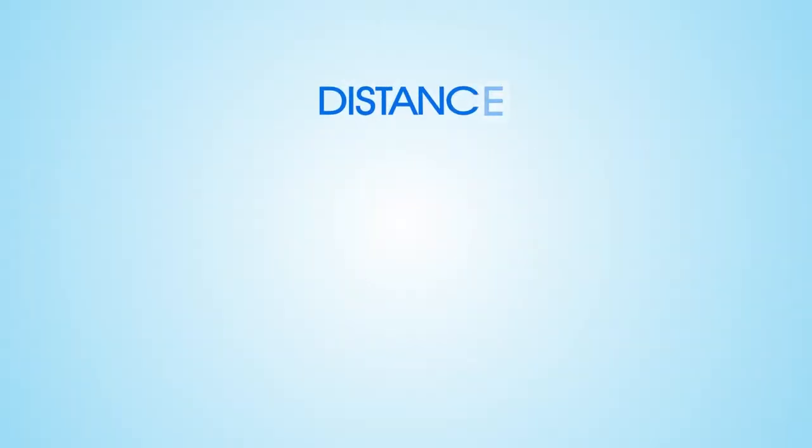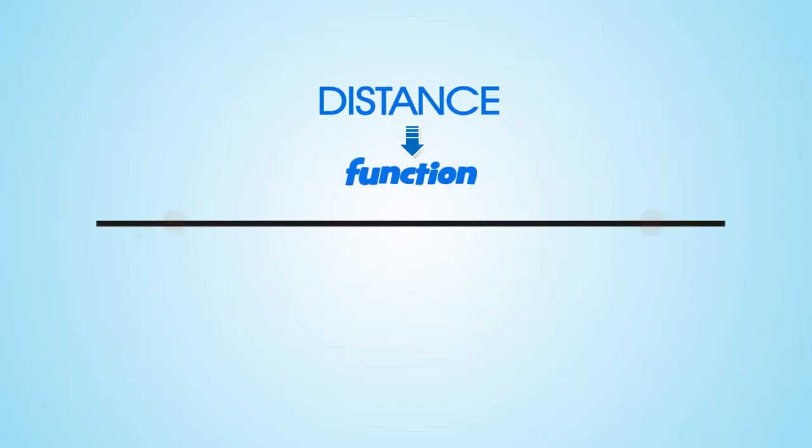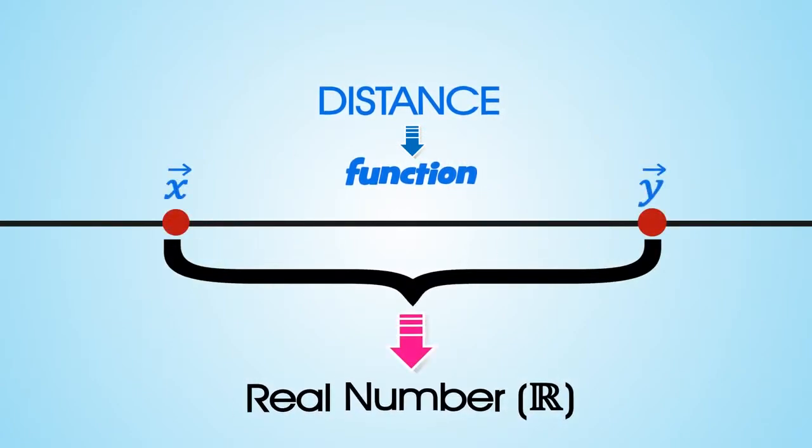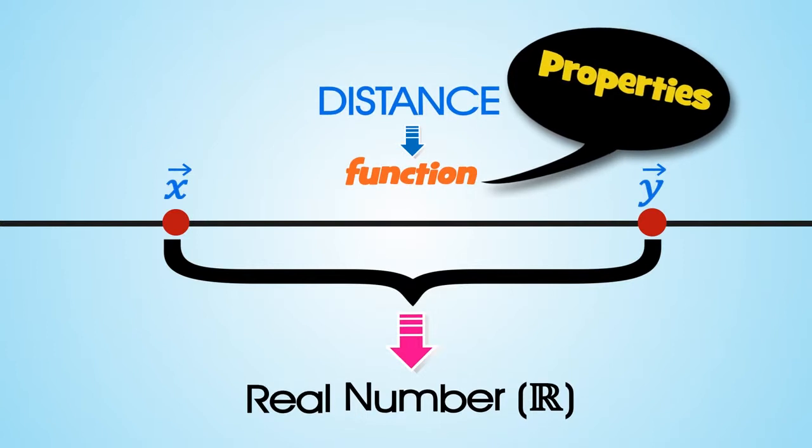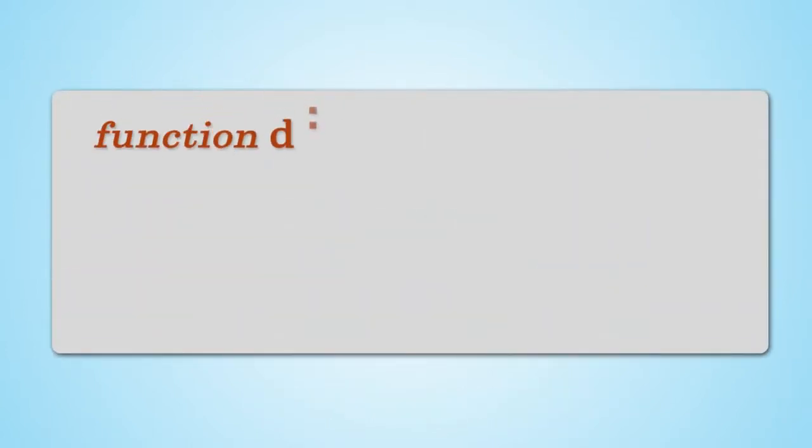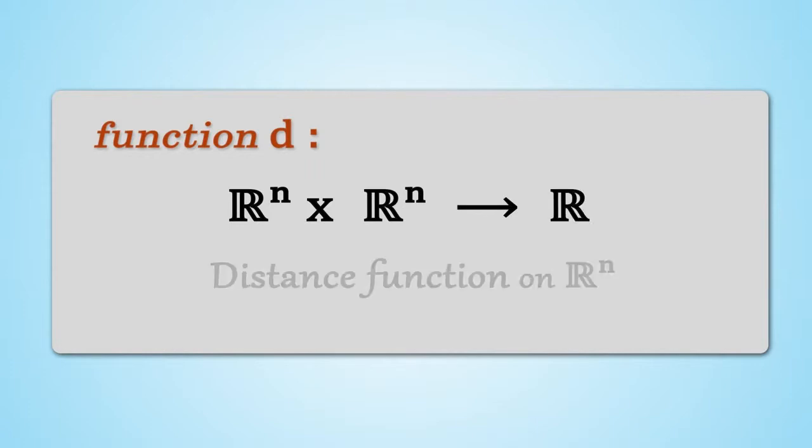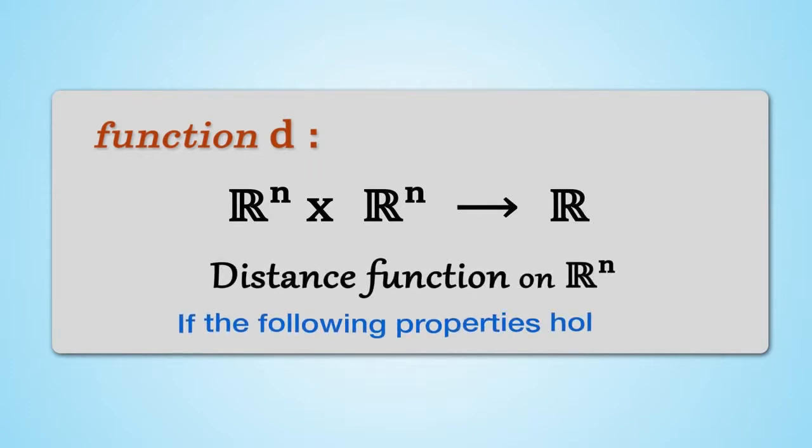We decide that distance should be a function that inputs two vectors and outputs a real number. Moreover, we decide on a distance function's properties. We call a function d from ℝⁿ × ℝⁿ to ℝ a distance function on ℝⁿ if the following properties hold.